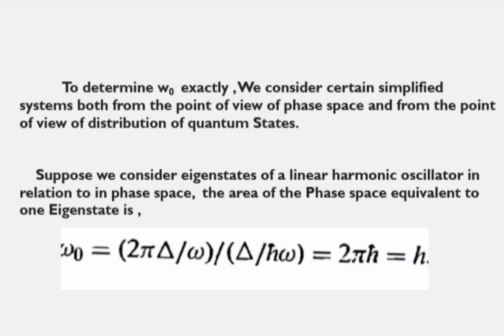We consider a two-dimensional case. The area of phase space is equivalent to one eigenstate, and is given by Ω₀ = (2π ħ / ω) divided by (δ / ħω), which simplifies through cancellation.